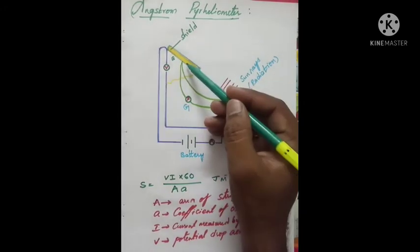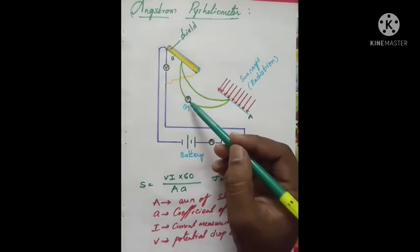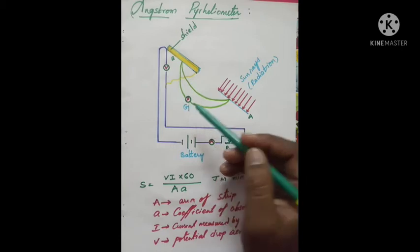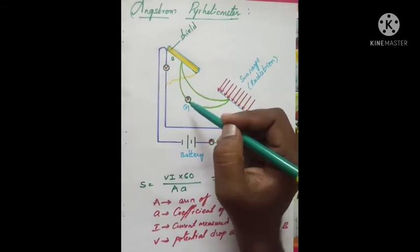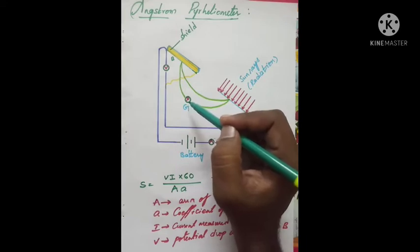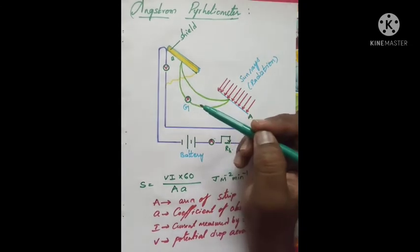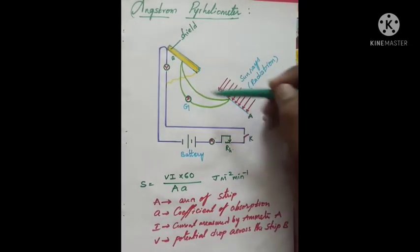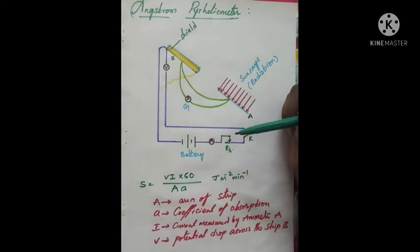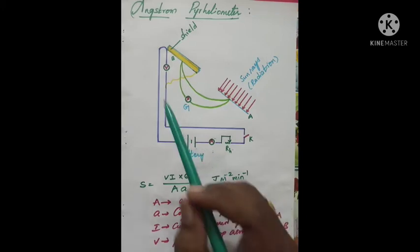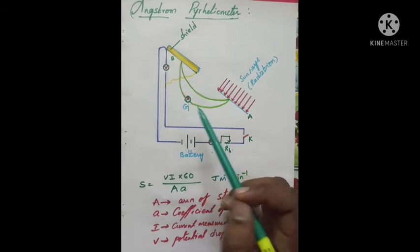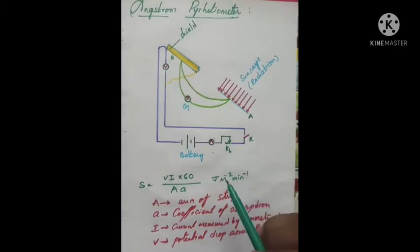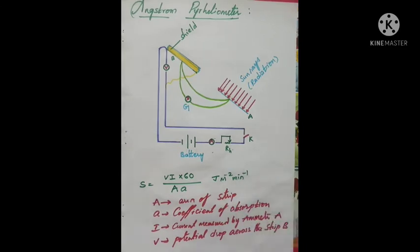We increase the current through strip B until we achieve zero deflection in the galvanometer. At that point, the temperatures of strip A and strip B are equal. From the known values of current measured by the ammeter and potential difference measured by the voltmeter, the heat supplied to B — and hence the solar energy absorbed per second by A — can be determined.